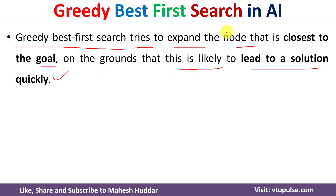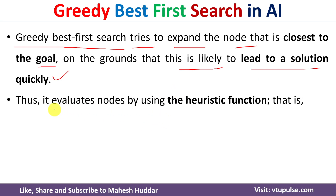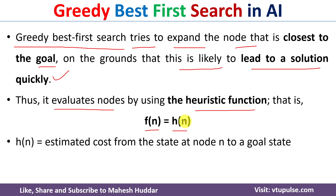What the greedy best first search algorithm does is: from a given node it identifies all paths, and the path which is closer to the goal node is selected. This is repeated until the goal node is reached. To do this, the algorithm evaluates nodes using the heuristic function — f(n) is always equal to h(n) — where h(n) is the estimated cost from the current node n to the goal state. The node with the minimum value is selected each time.